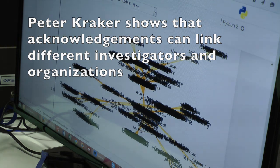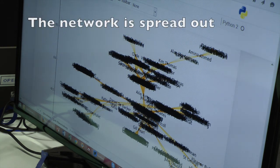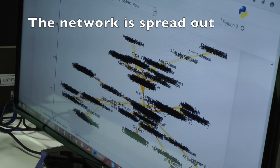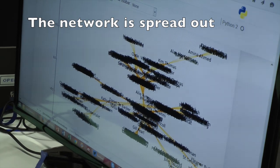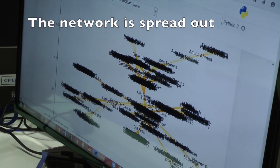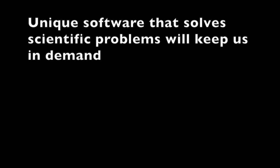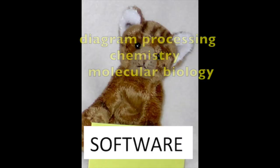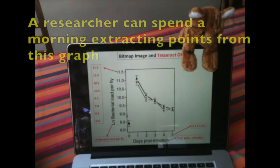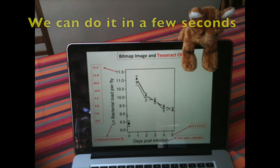He's also a very central person but his network looks more natural — it looks more spread out. Much of our software is unique and will allow scientists to do things they can't do at the moment. And here's a graph that we can interpret in a few seconds.